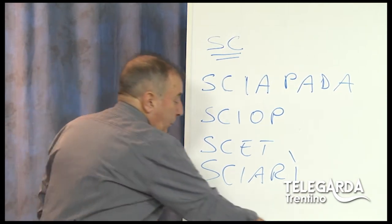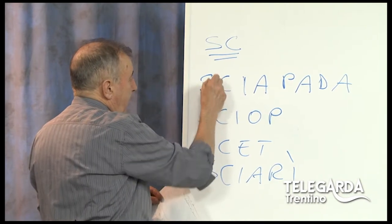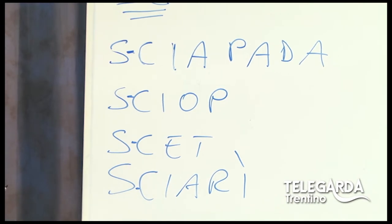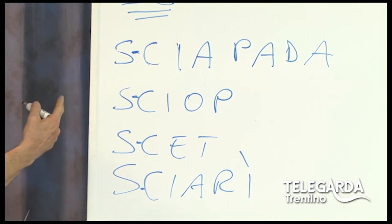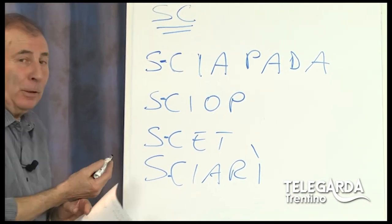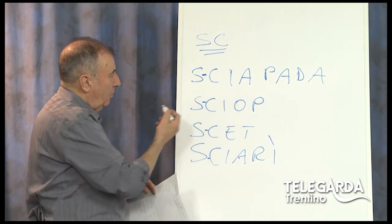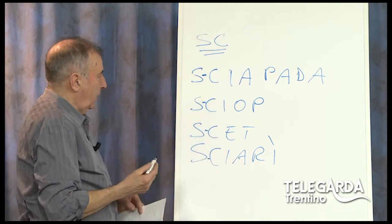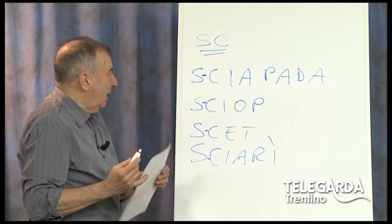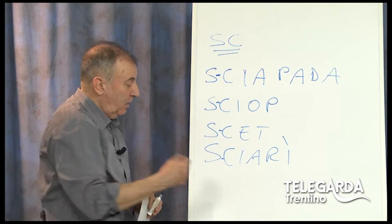Come si fa per facilitare questa corretta pronuncia? Si fa semplicemente: fra la S e la C si mette una lineetta. Difatti, se voi guardate la parola scet e la trasformate in italiano, diventa schietto. La lingua italiana mette l'H per evitare la pronuncia scorretta. Il dialetto purtroppo l'H non la possiamo mettere, quindi dobbiamo separare la S dalla C con una lineetta. Sciapada è un gruppo disordinato di persone, sciop è lo schioppo, scet è schietto, sciari è schiarito. Quando usate questa SC seguita dalla I e dalla E, metteteci sempre la lineetta per evitare una pronuncia scorretta.